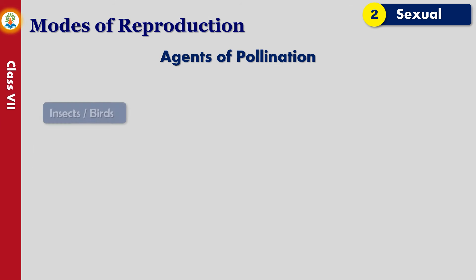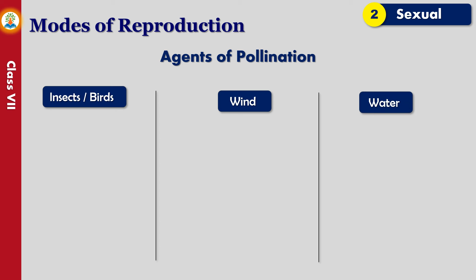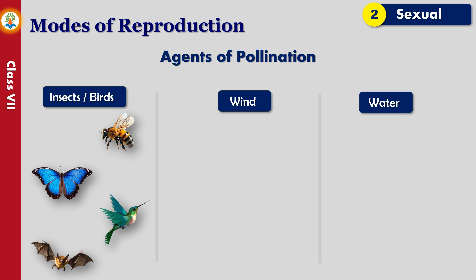In order to carry out cross-pollination, some external agents are required for transferring pollen from one flower to another. Natural agents such as birds, insects, animals, wind, and water help in transferring the pollen. They are called pollinating agents. Many insects feed on the nectar of flowers and are attracted to the color and odor of flowers.